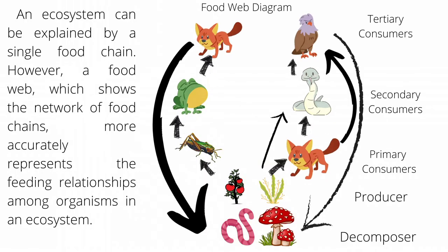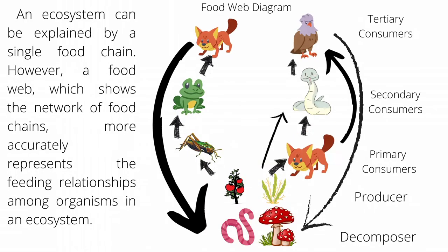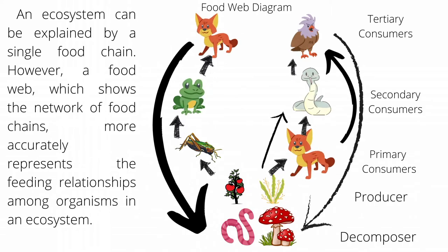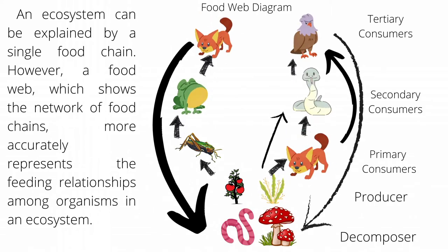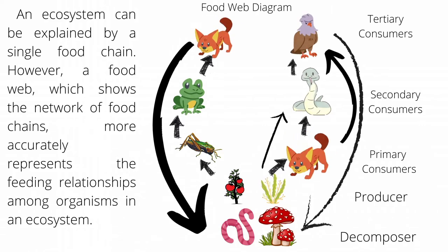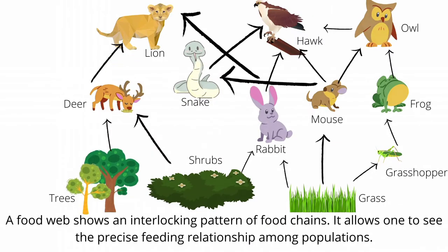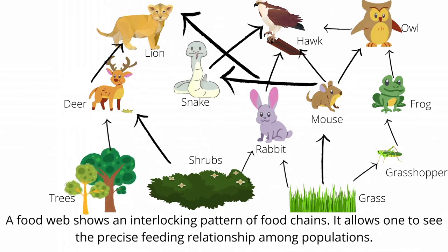An ecosystem can be explained by a single food chain. However, a food web, which shows the network of food chains, more accurately represents the feeding relationships among organisms in an ecosystem. A food web shows an interlocking pattern of food chains.